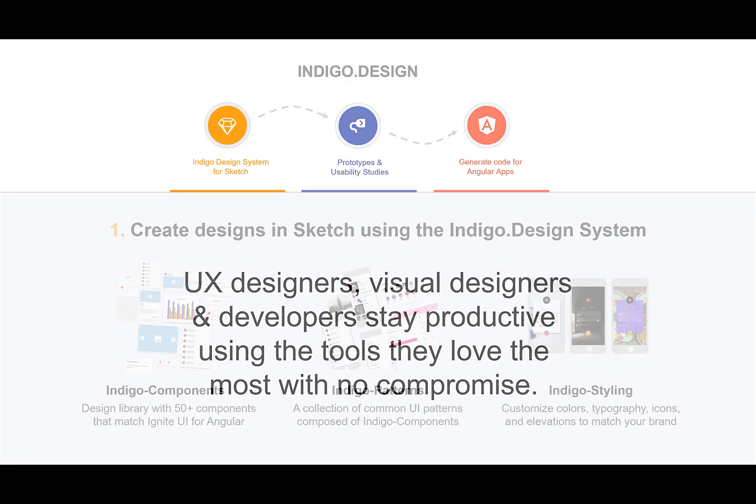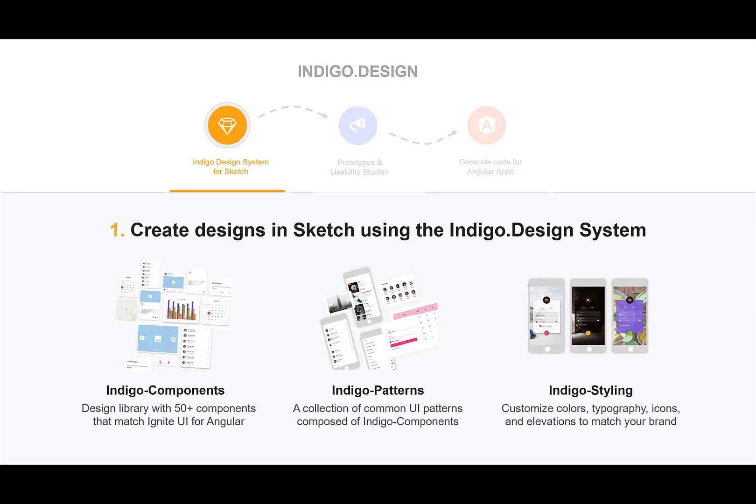This is made possible in Indigo Design with the Indigo Design System for Sketch. In Sketch, you can create designs with the Indigo components, Indigo patterns, and Indigo styles. With the Indigo components, you have 50 plus components that match the Infragistics Ignite UI for Angular product. With the patterns, we've pre-built a collection of common UI patterns composed of the Indigo components. And with styling, you can customize colors, typography, icons, and elevations to match your brand.